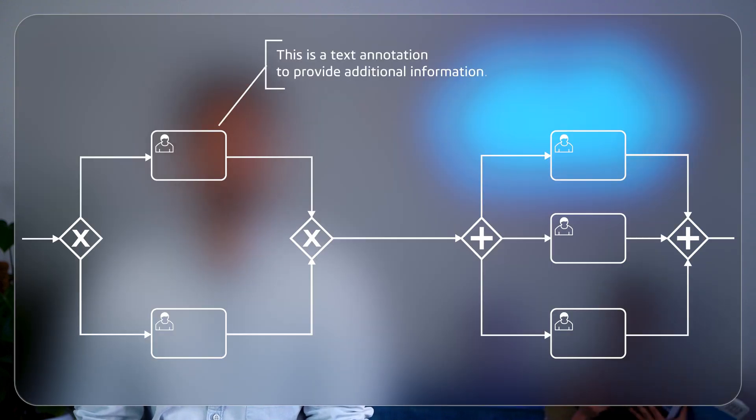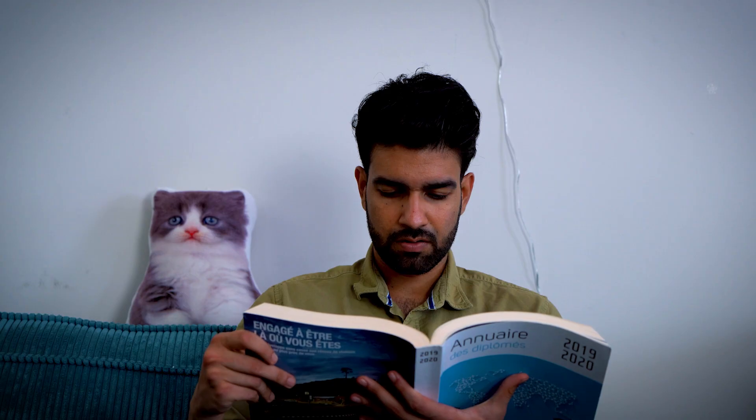I've also heard about artifacts — how do they fit in? Artifacts like text annotations add extra details, and groups visually combine elements to show they are related. Finally, jumping onto the structures, you can use sub-processes for complex steps and aim for clarity. Name your activities clearly, use annotations for details, and keep your diagrams neat.